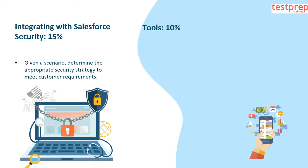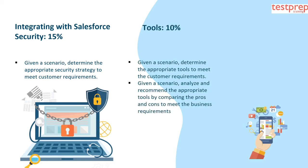Number 6, Tools, 10%. It contains: first, given a scenario, determine the appropriate tools to meet the customer requirements. Second, given a scenario, analyze and recommend the appropriate tools by comparing the pros and cons to meet the business requirements.